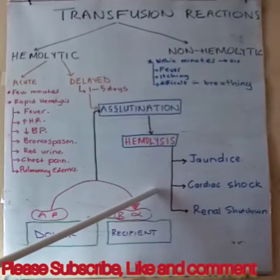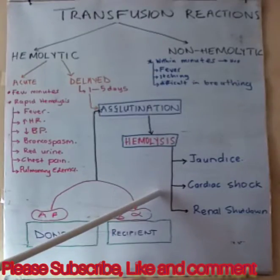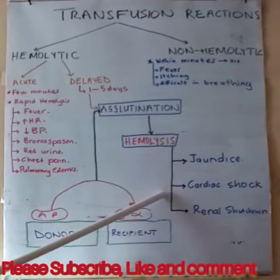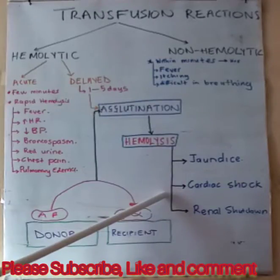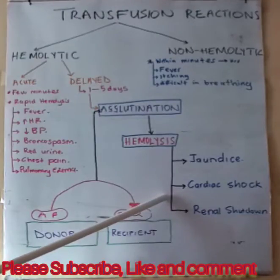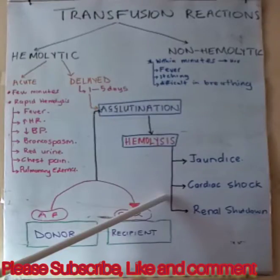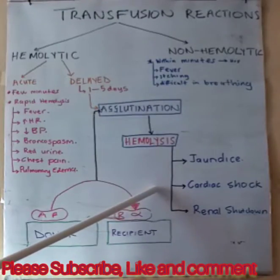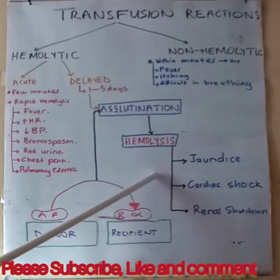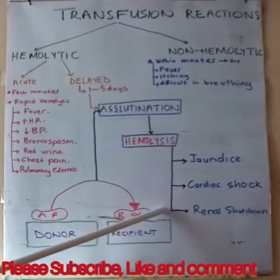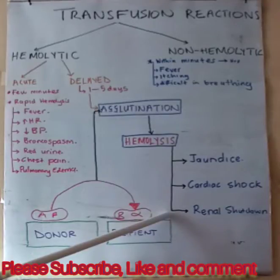The second complication is circulatory shock. When hemoglobin is released into the plasma, it increases the viscosity of blood, increasing the workload of the heart and leading to heart failure. Moreover, toxic substances released from hemolyzed cells reduce arterial blood pressure, causing circulatory shock.